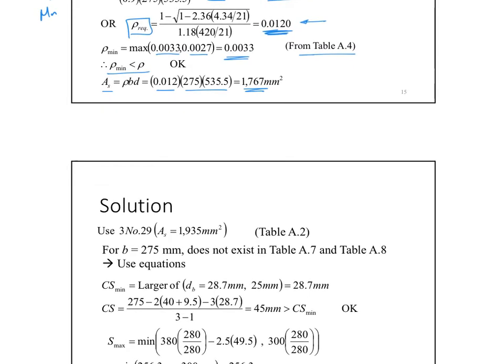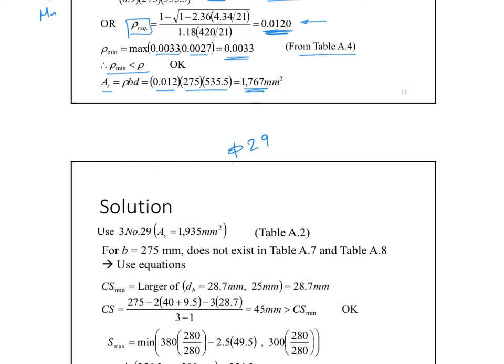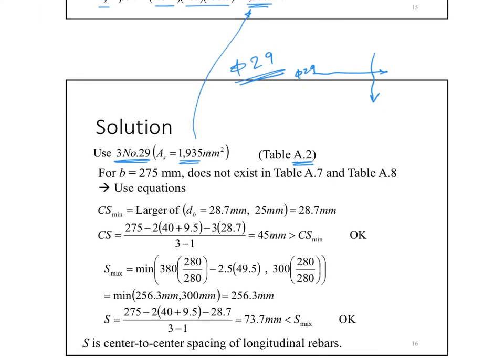How much is this in terms of steel with a phi 29? We picked up the phi 29 as our bar size. Then you go to the table A2. Go to phi 29. Use the phi 29 and find how many bars you need. You will find that 3 number 29 gives an area equals 1935. It is bigger than what you need. Then you're good. Now, when I want to check the spacing, table A7 and A8 does not have a B equals 275. So, in this case, we have to calculate it by ourselves. So, what do we do? We have CS minimum, which is the larger of diameter of the bar and 25. So, this is the diameter of the bar. And then calculate CS based on having 3 bars. So, that gives 45 bigger than CS minimum.